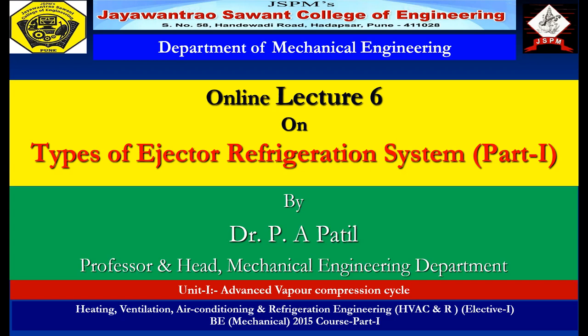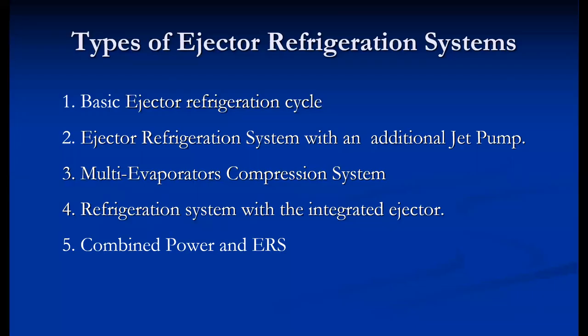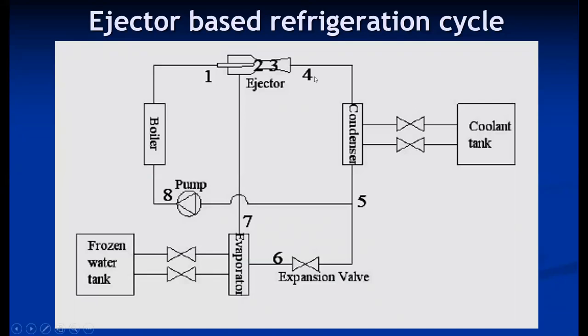There are various configurations used in practice based on applications. We are going to discuss four combinations over this lecture and the next. These are: the basic ejector refrigeration system, which we already discussed; the ejector refrigeration system with an additional jet pump; the multi-evaporator compression system, used when more than one temperature needs to be maintained; refrigeration system with integrated ejector; and the combined power and ejector refrigeration system.